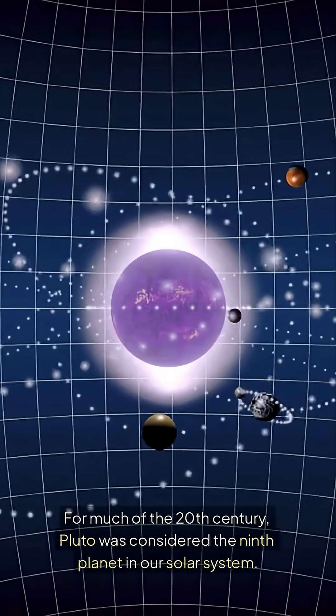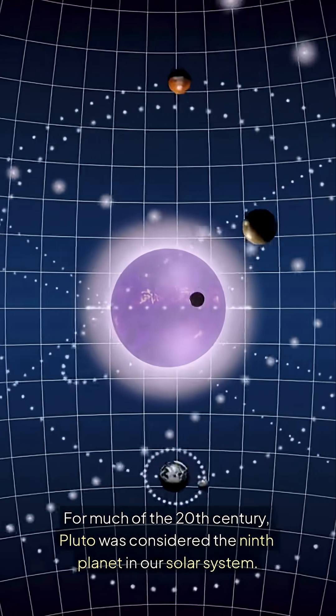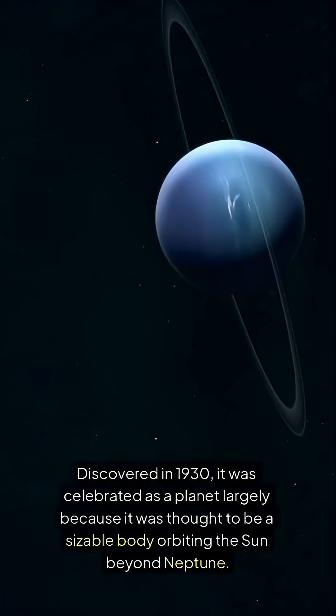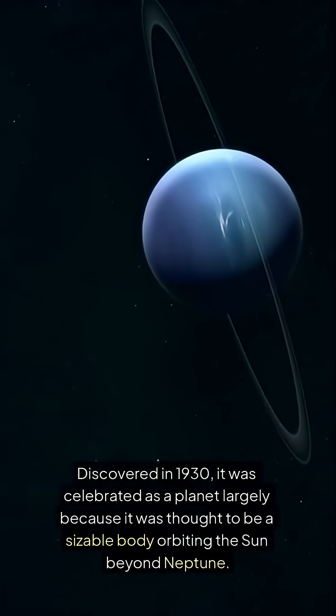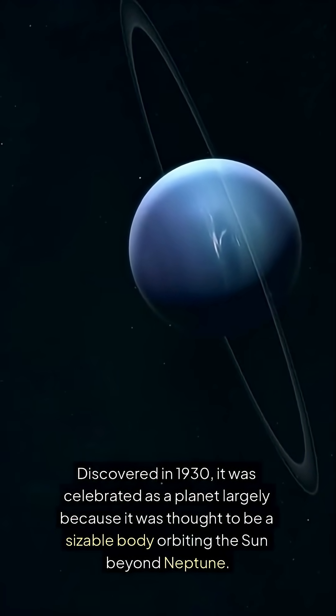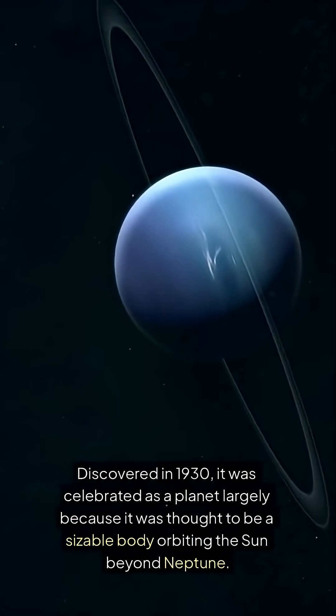For much of the 20th century, Pluto was considered the ninth planet in our solar system. Discovered in 1930, it was celebrated as a planet largely because it was thought to be a sizable body orbiting the Sun beyond Neptune.